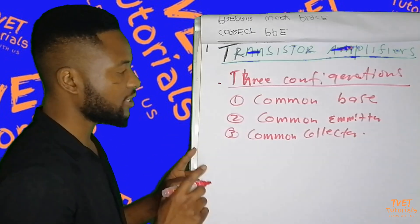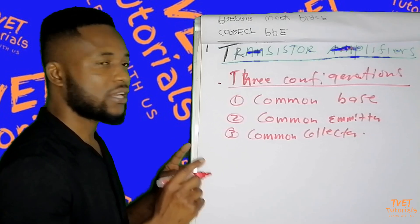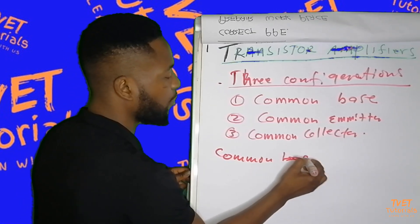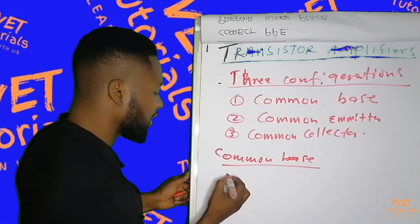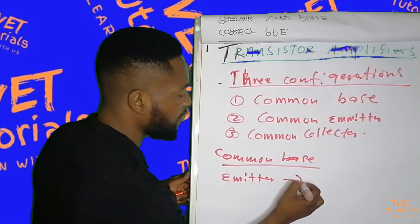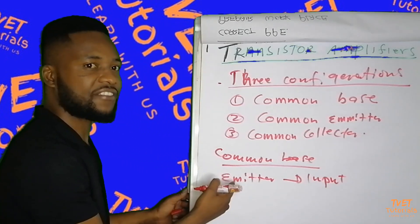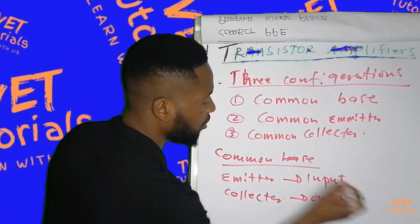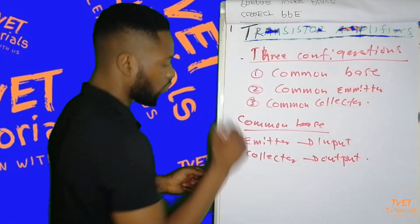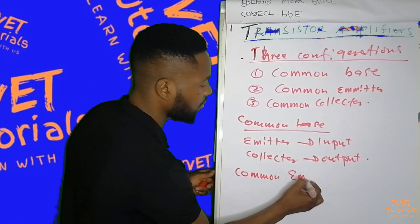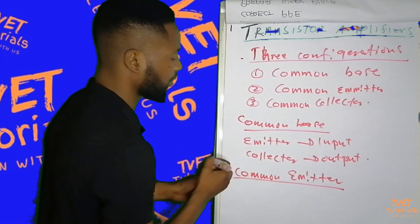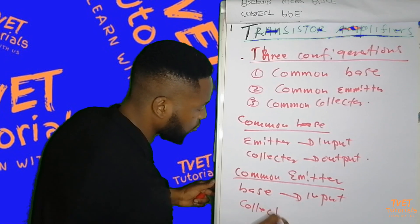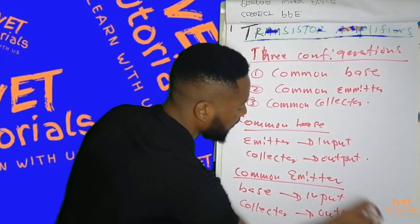It is very important for you to know which one is your input and which one is your output. For common base, the emitter becomes your input — this is very important — and the collector becomes your output. For common emitter, we have the base as the input and the collector as the output.